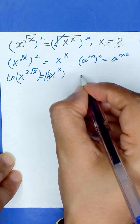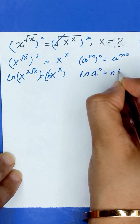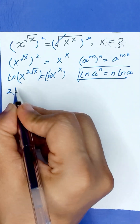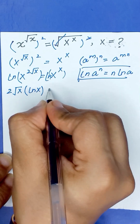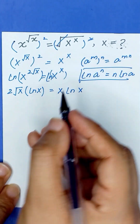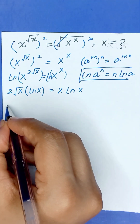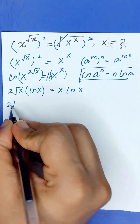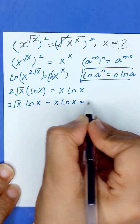We know that ln of a to the power n is equal to n times ln of a. So it will become 2 times square root of x times ln of x, is equal to x times ln of x. Now we will take x ln of x to the left hand side, so it will become 2 times square root of x times ln of x, minus x times ln of x, is equal to 0.